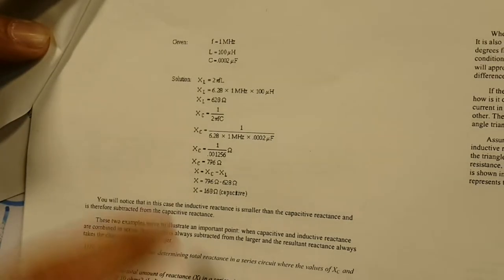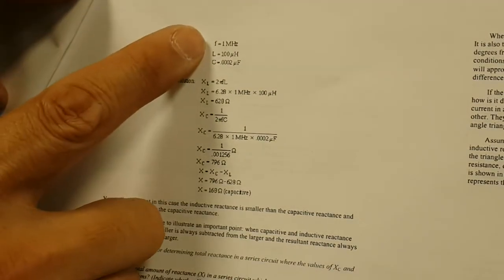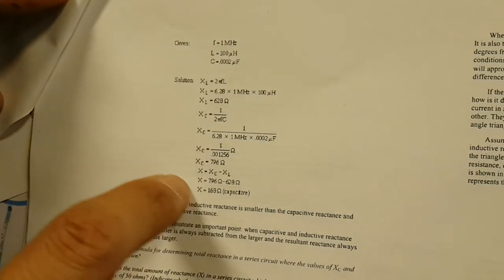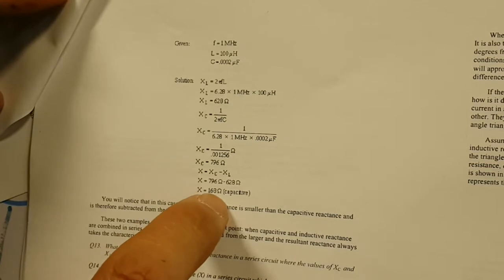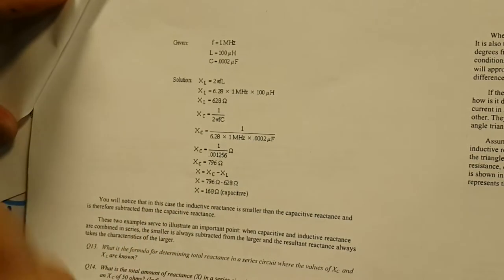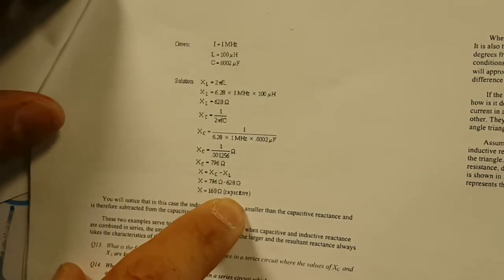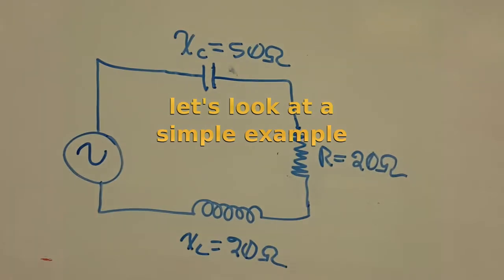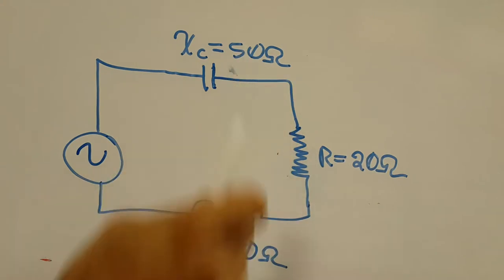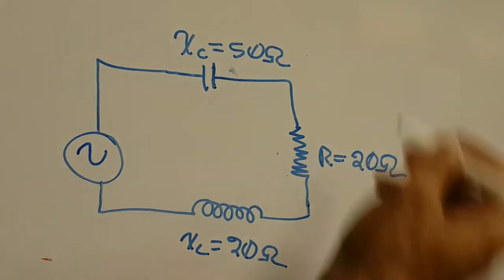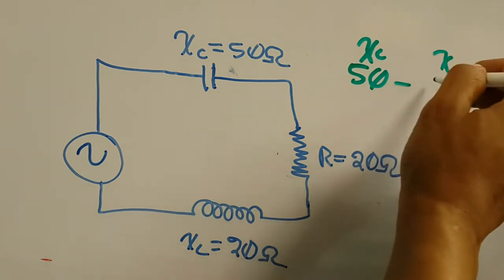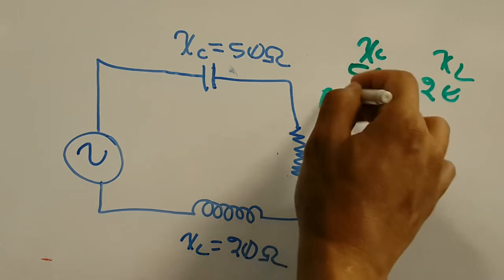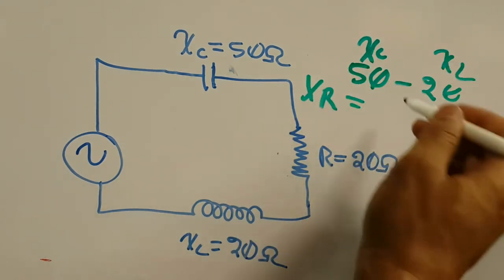On page 411, they do the same problem but change some values — specifically the frequency — so now the capacitive reactance is larger than the inductive reactance, making it a capacitive circuit overall. In this example, our capacitive reactance is 50 ohms and our inductive reactance is 20 ohms. Since capacitance is larger, we take 50 minus 20, giving us a total reactive value of 30 ohms capacitive reactance.